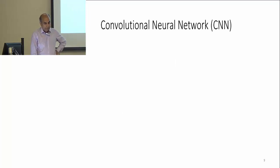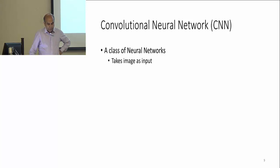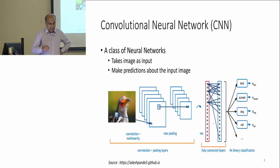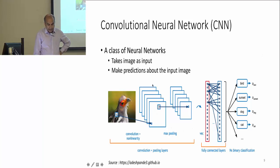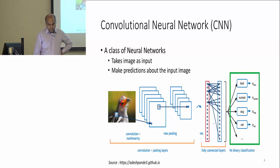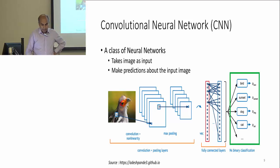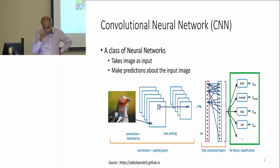A convolutional neural network, or CNN, is a class of neural networks that takes an image as input and makes predictions about it. For example, given an image, it passes through convolutional layers and fully connected layers and produces an output — the probability that the image contains certain objects like a bird, sunset, or dog.